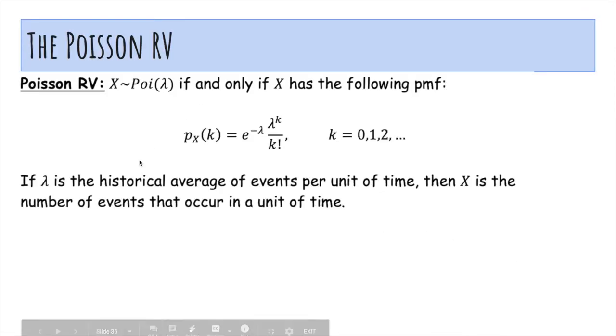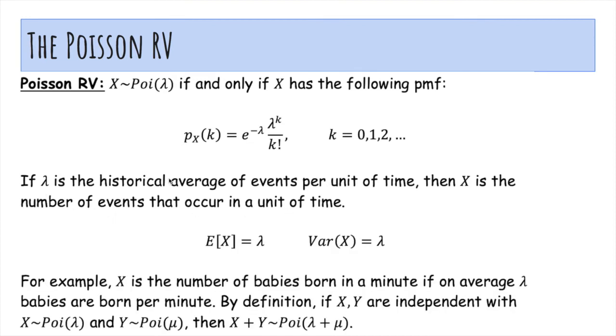So X is Poisson lambda if it measures the number of events that occur in a single unit of time where the historical average was lambda. Here's what we derived the expectation of variance earlier.